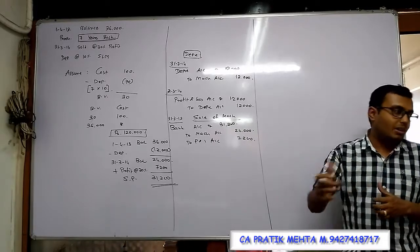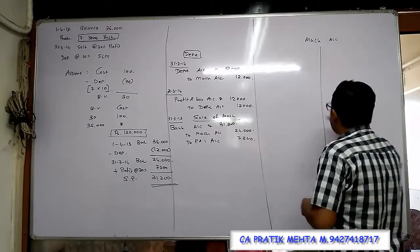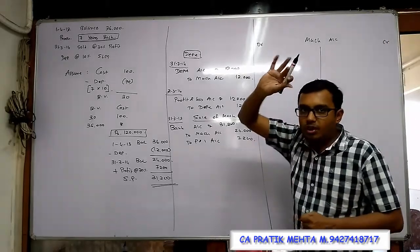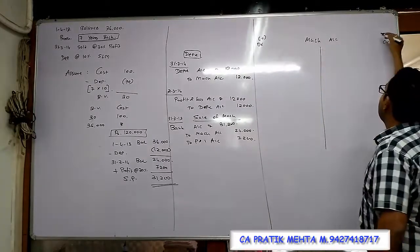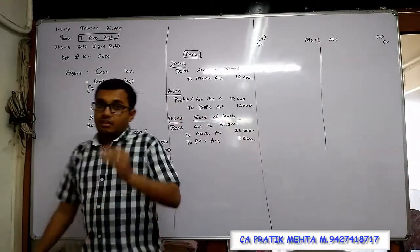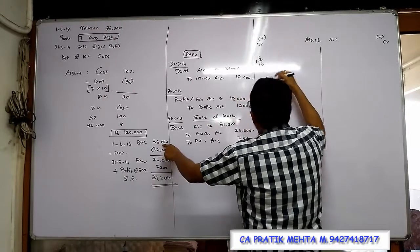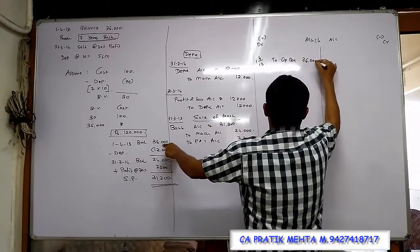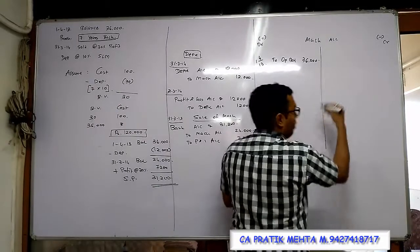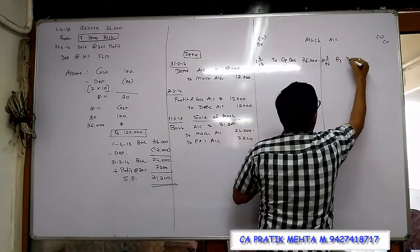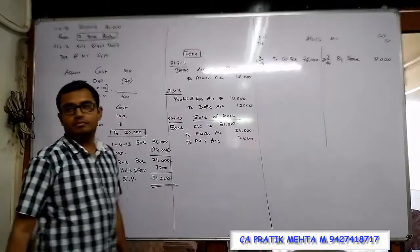But in the question, if you look carefully, they have asked for journal entry as well as machinery account. So can I say I need to make machinery account? Please verify debit side and credit side. Machine is an asset. Debit what comes in - if asset increases, write on debit. If it decreases, write on credit. Let's see what they have given. On 1-4-2013, they have given opening balance of 36,000. After that, depreciation will be applied. Depreciation means machine is decreasing, so credit side. 31st March 2014, by Depreciation, 12,000.